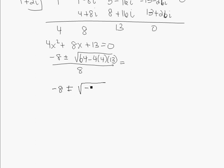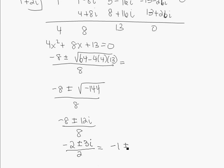So you get negative 8 plus or minus the square root of negative 144 all over 8. So I get negative 8 plus or minus 12i over 8. 4 goes into all 3 of those, so I get negative 2 plus or minus 3i all over 2, which is the same as negative 1 plus or minus 3 halves i. Either one of these answers is acceptable. So we have four complex roots. We have 1 plus or minus 2i and negative 1 plus or minus 3 halves i. And these are all complex.